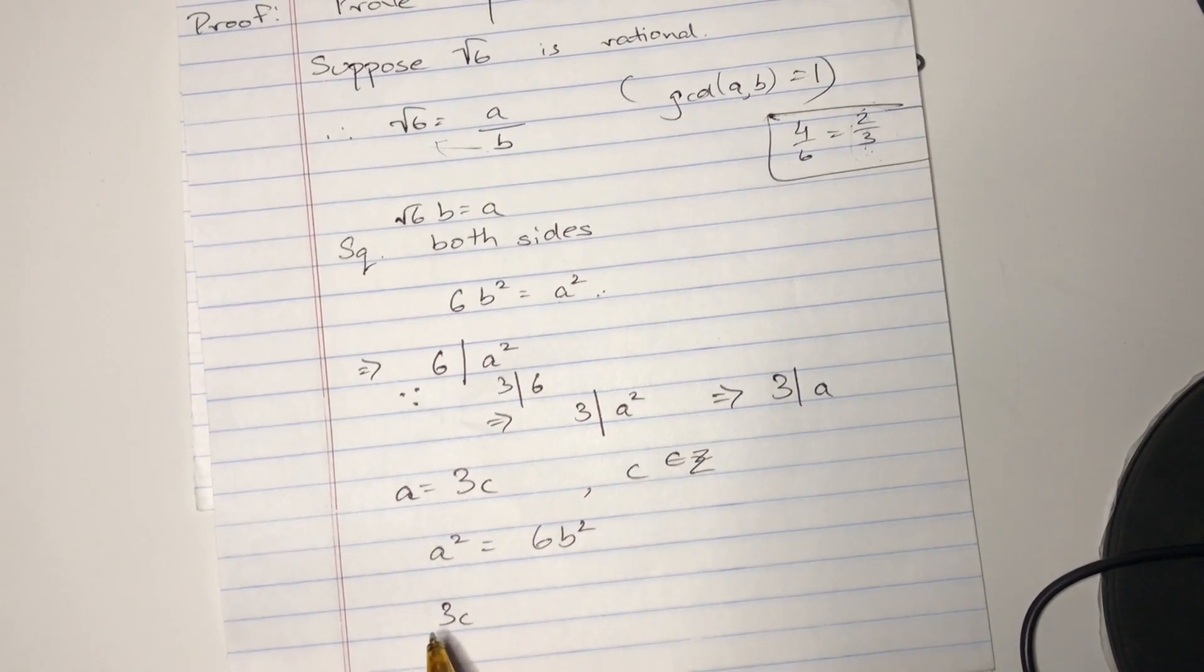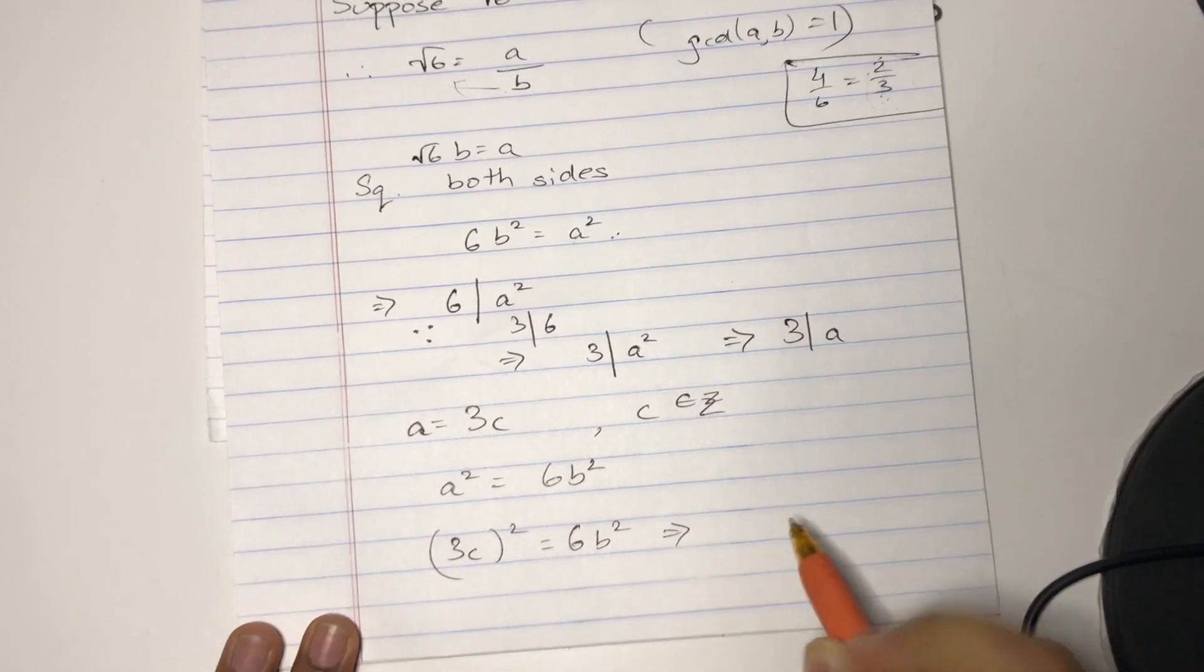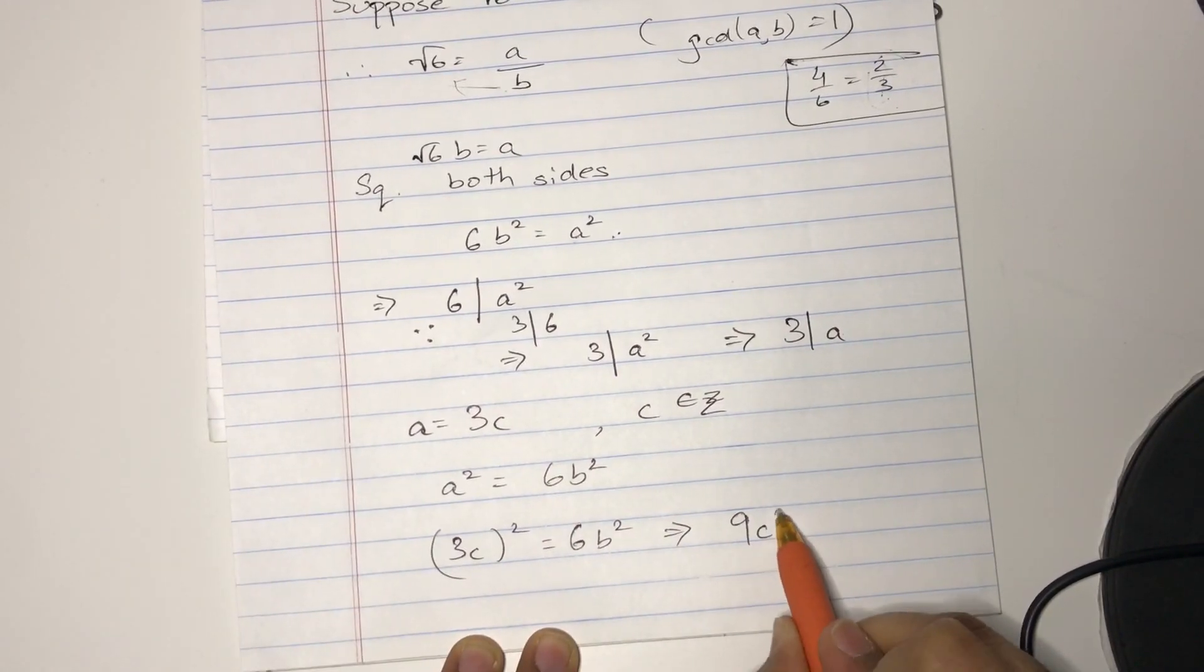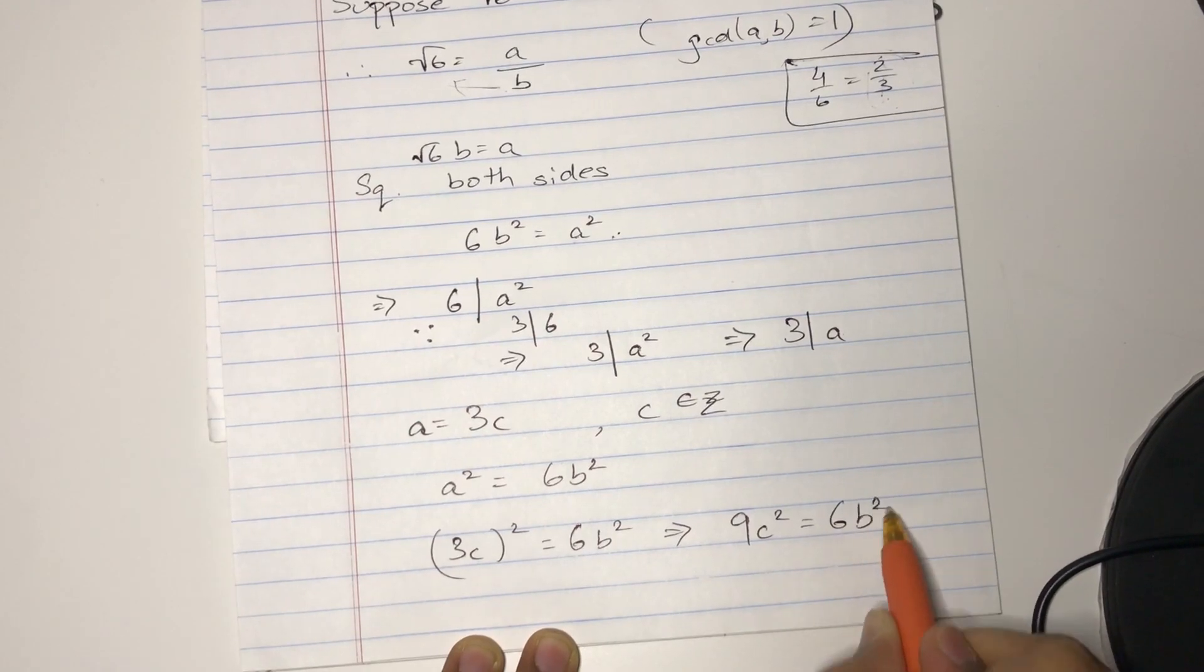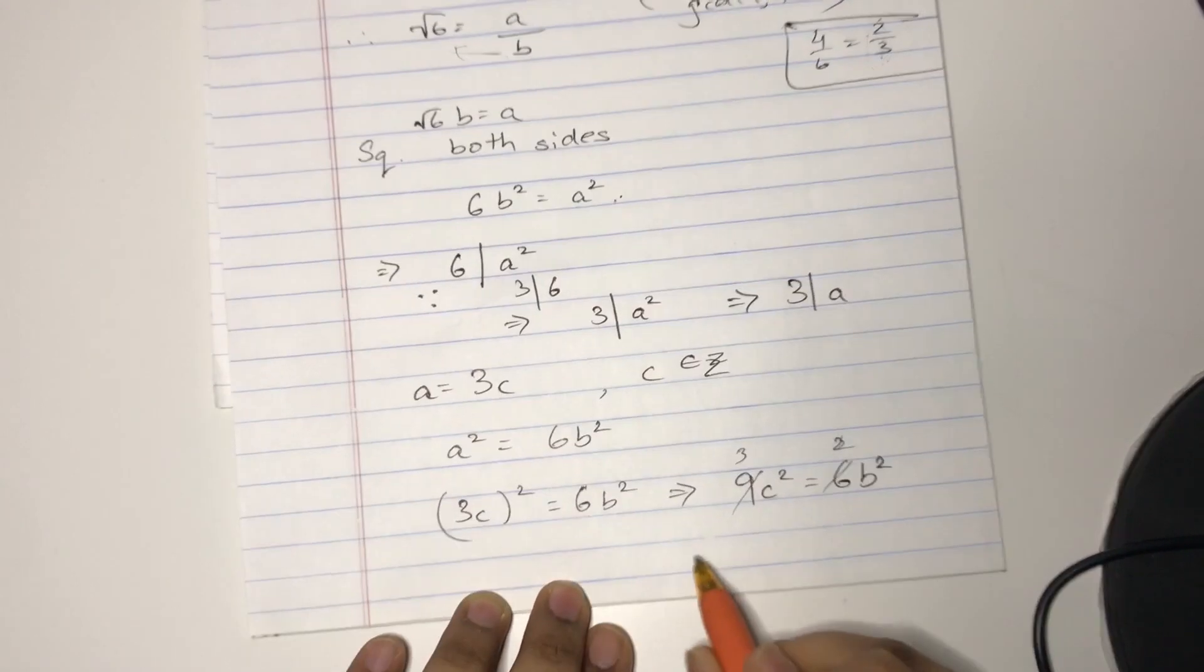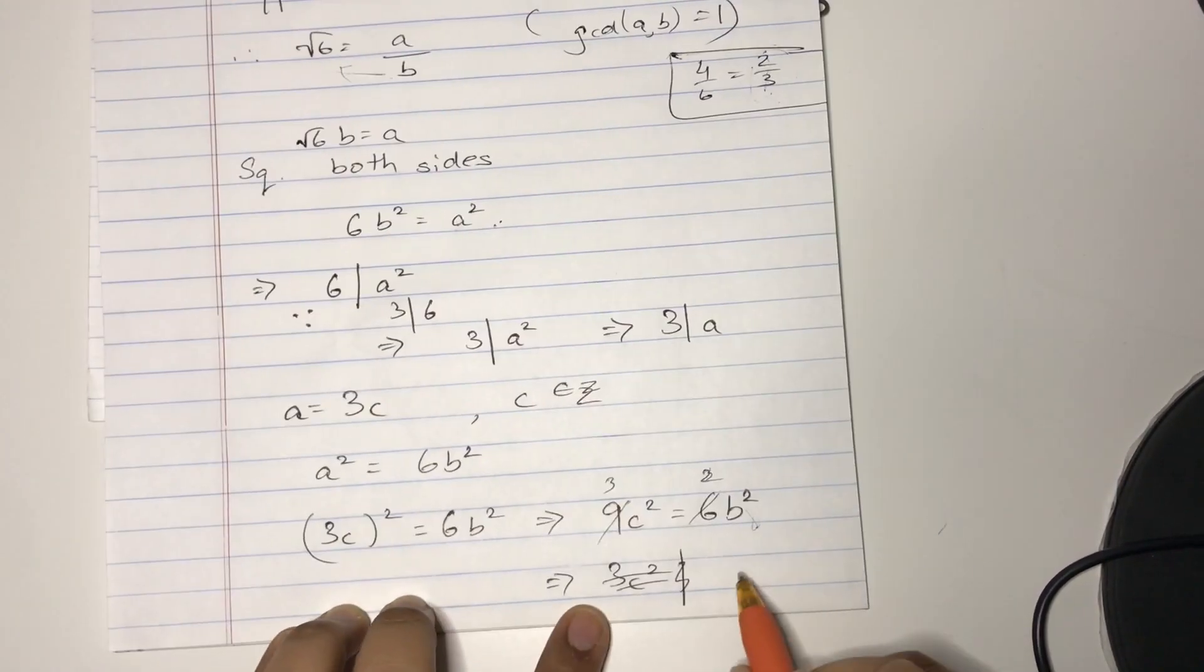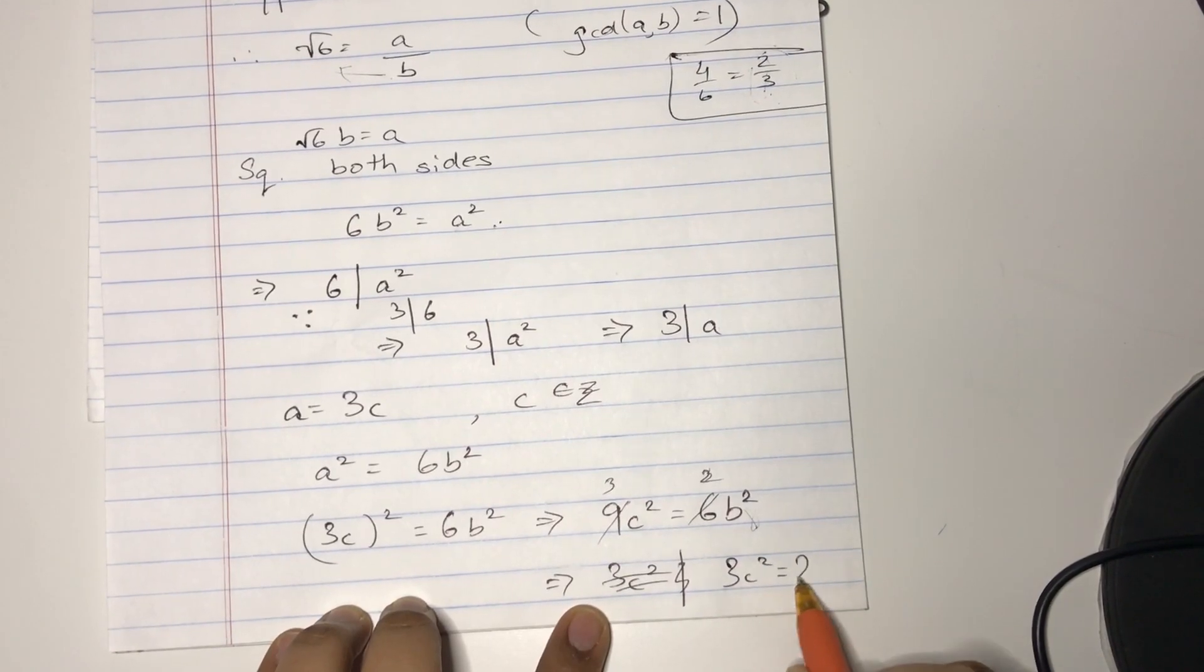So 3C squared equals 6B², which really means 9C² equals 6B². I'm just going to divide 3 from both sides. This is 2, this is 3. Therefore, 3C² equals 2B².